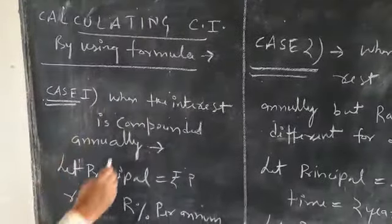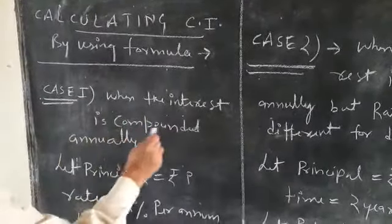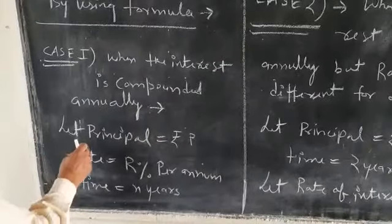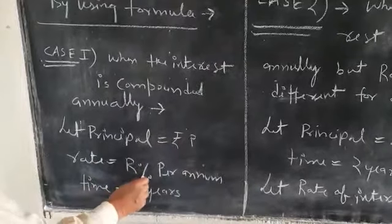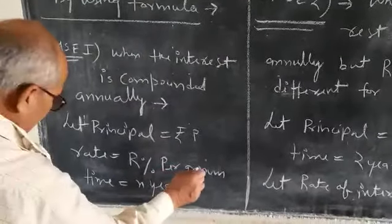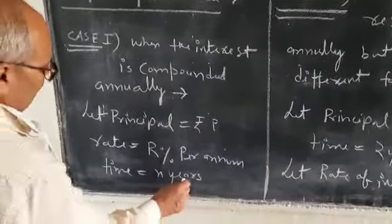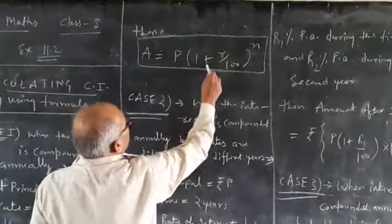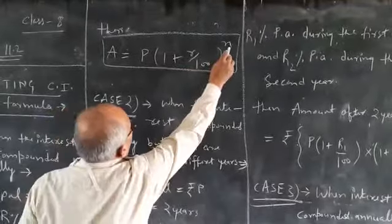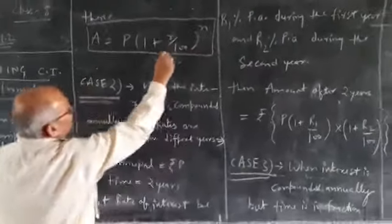Case first, when the interest is compounded annually. Let principal equal P, rate equal R percent per annum, time equal n years. Therefore, A equals P times 1 plus R upon 100 to the power n. This is the required formula.